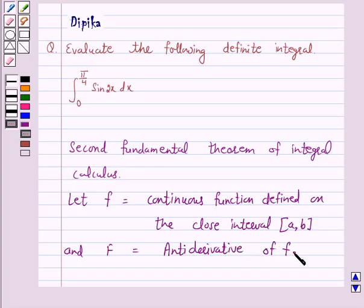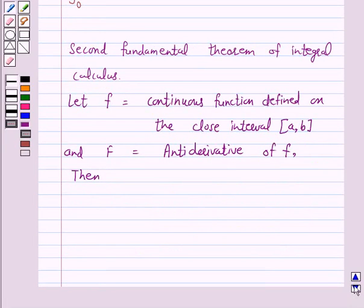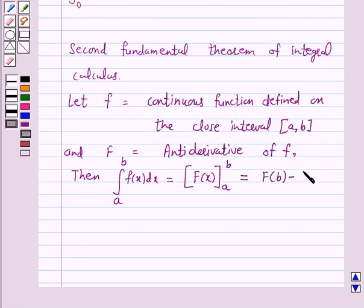Then integral from a to b of f(x) dx equals [F(x)] from a to b, which equals F(b) minus F(a). That is, the integral from a to b of f(x) dx equals the value of the anti-derivative F at the upper limit b minus the value of the same anti-derivative at the lower limit a.